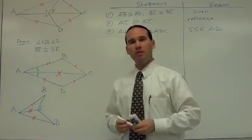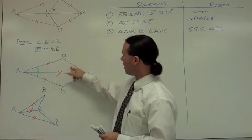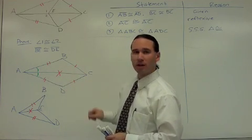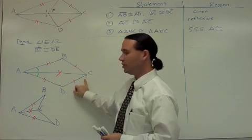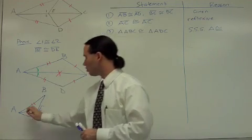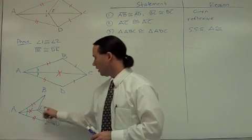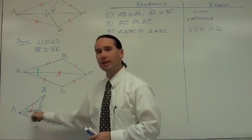Why? Well, CPCTC. In a pair of congruent triangles, these angles are opposite congruent sides, BC congruent to DC. So if these angles are congruent here, then it must be true that these angles are congruent here: angle BAE and angle DAE.